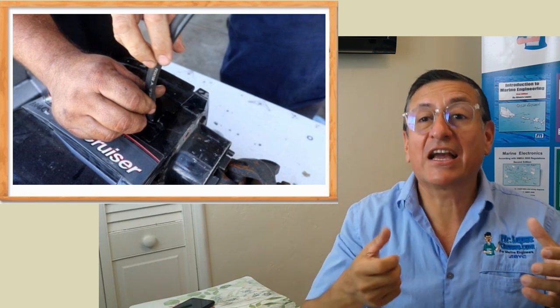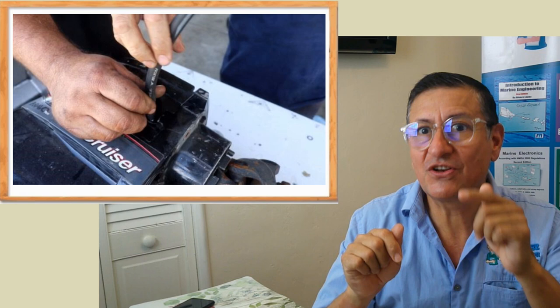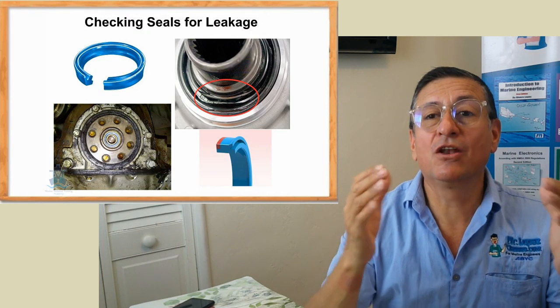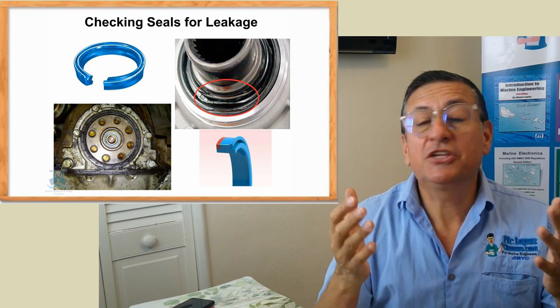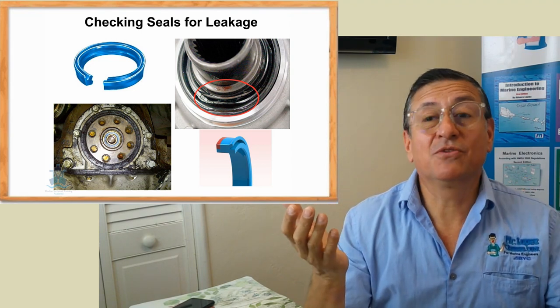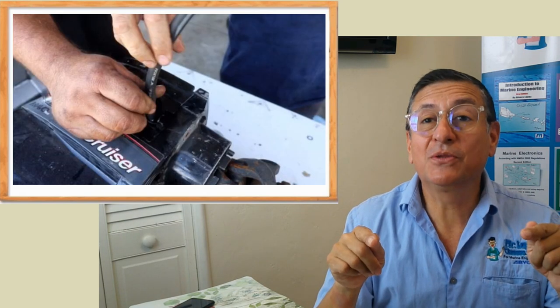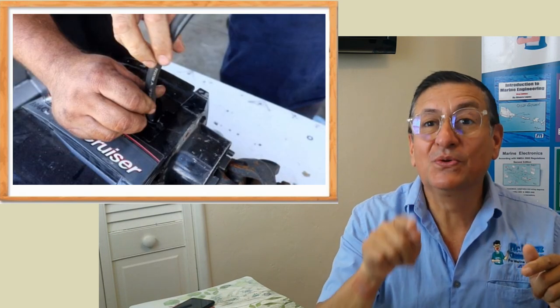The procedure to do the vacuum to verify the condition of the seals. If you have suspicion that the seals in the lower unit are damaged, normally the symptom is that you have milky oil in the lower unit. Today we are going to learn the process to do the vacuum.